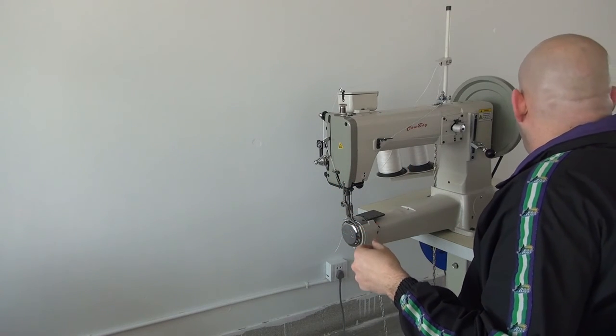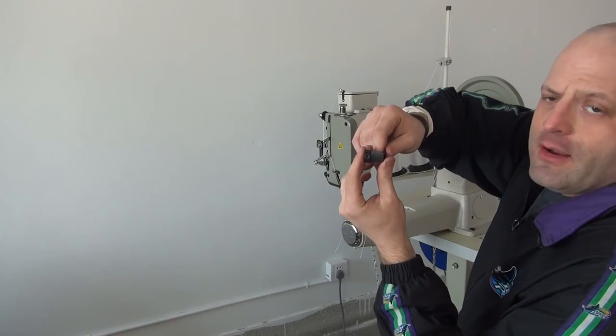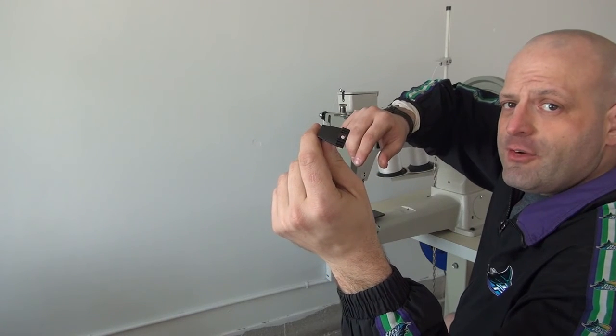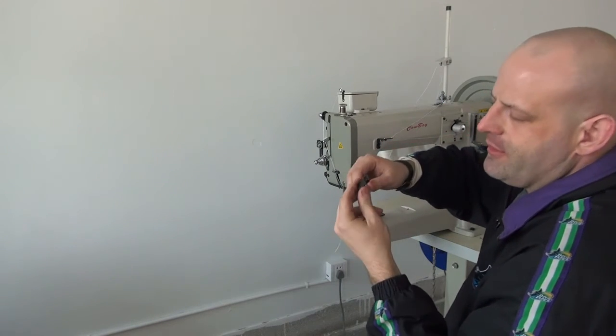Usually, when you use the fabric or padded material foot, you'll generally want to use the toothed feed dog as well. And the toothed feed dog has teeth or serrations embedded into the surface of the feed dog, and so it allows you to grip the material much better.